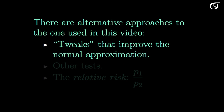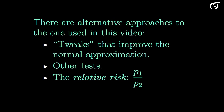A couple of points to note: there are some alternative approaches to the ones used here, and there are little tweaks that improve the normal approximation, as well as some very different tests depending on the sampling design. Another common quantity of interest is the relative risk — the ratio of the two proportions — rather than the difference. That is also common in statistics. But here we're looking at the difference, and we'll carry out this example in another video.